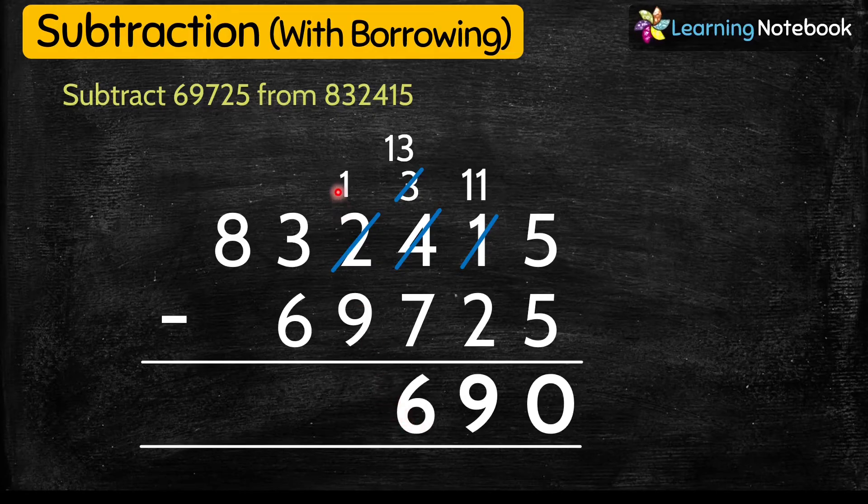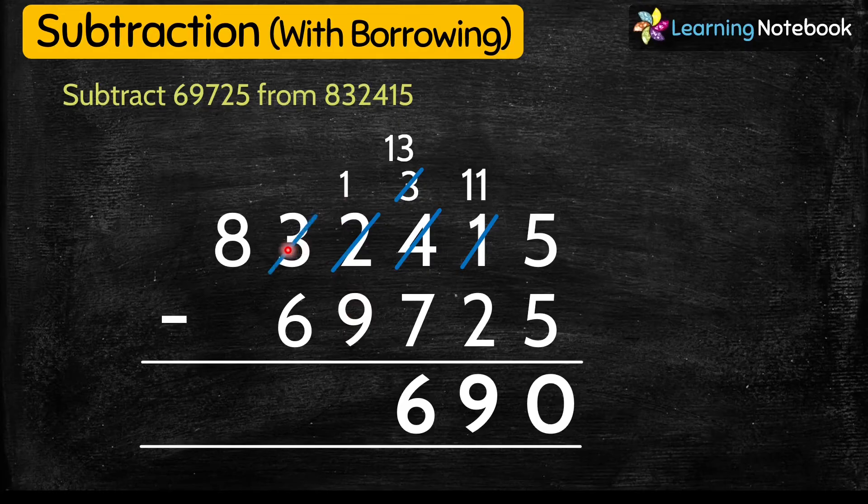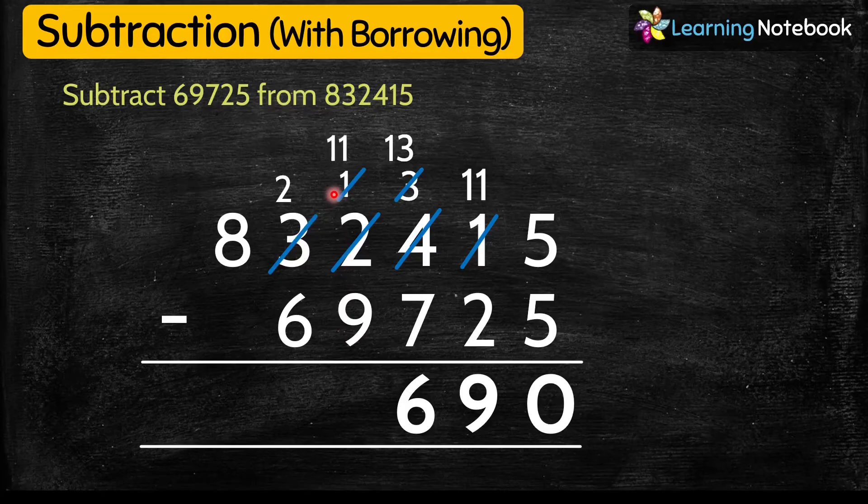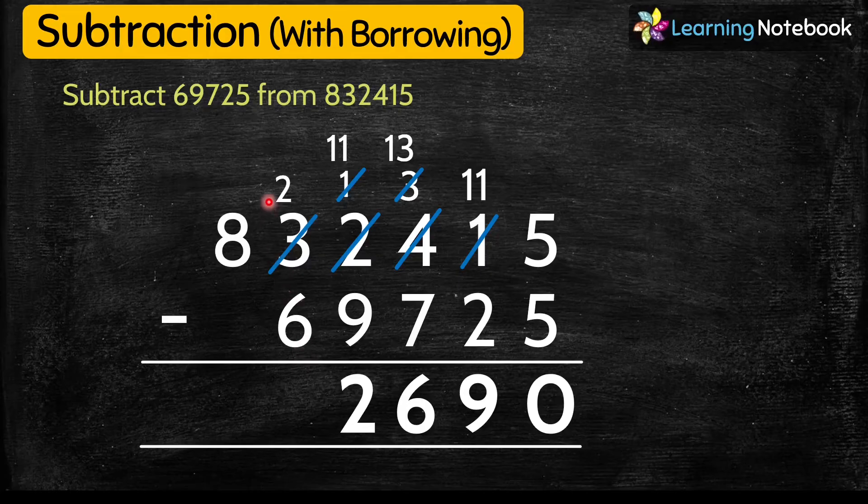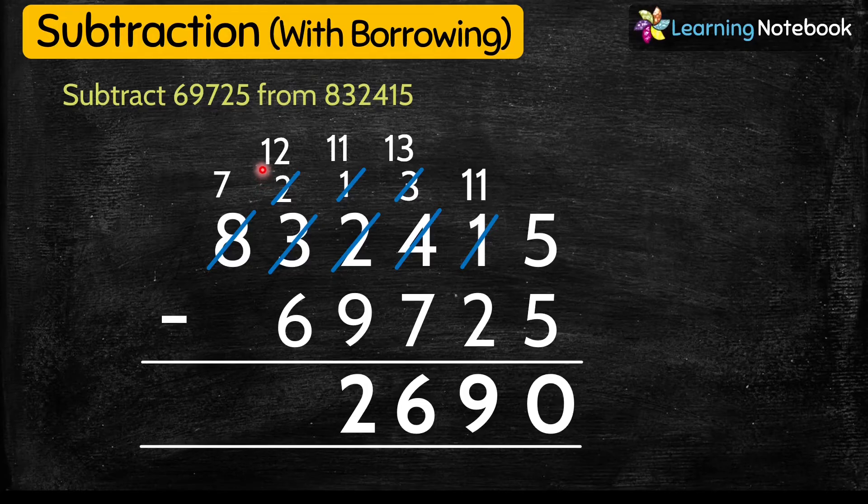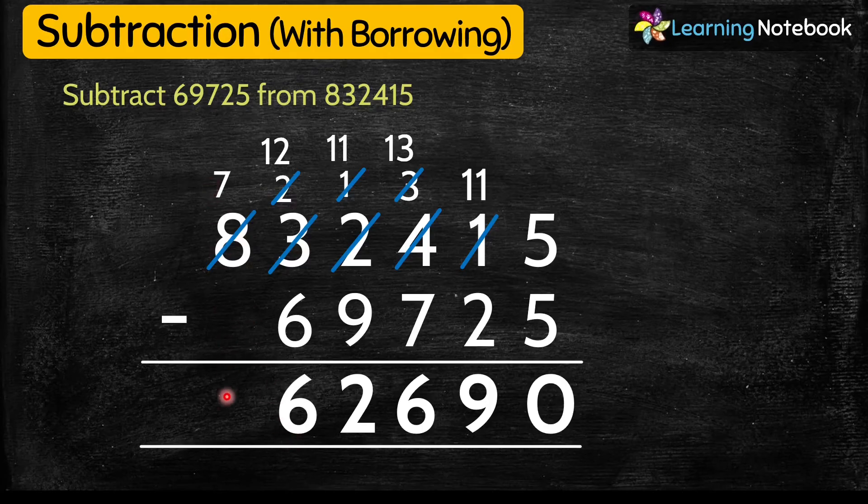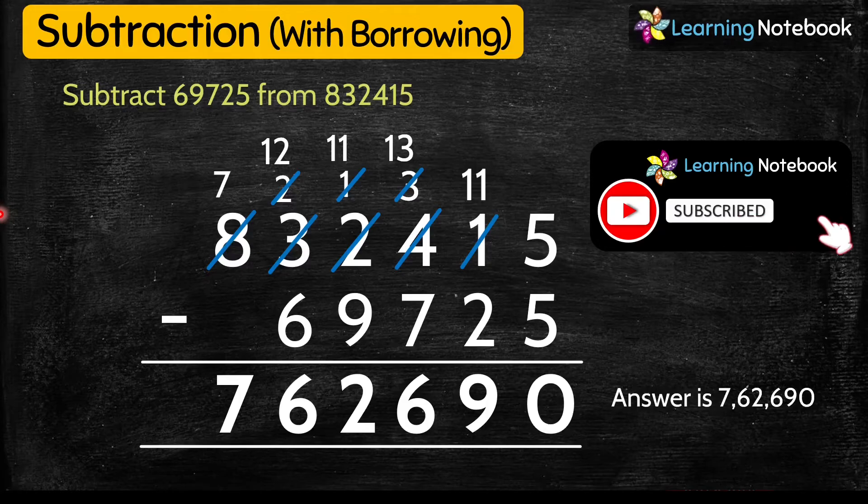Next, 1 is weaker than 6. So 2 borrows from 8. 8 becomes 7 and 2 becomes 12. So 12 minus 6 equals 6. And then we have 7. So answer is 762,690.